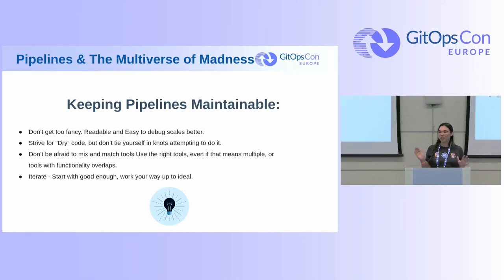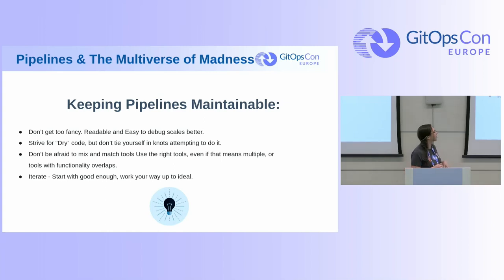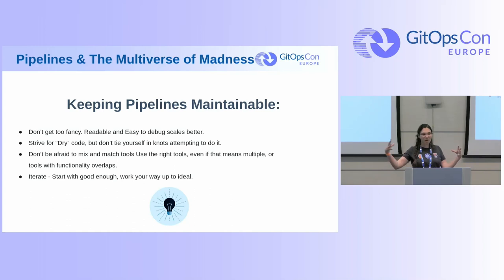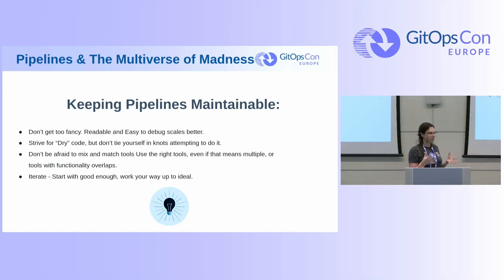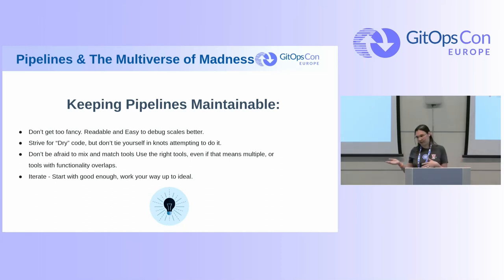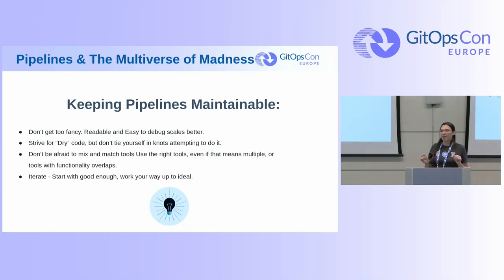The last part is keeping things maintainable. Don't keep it too fancy. Find logical breakout spaces where you can break things out, because it makes your overall CI/CD process easier to debug when something goes wrong, easier to follow, easier to observe. Feel free to experiment — try and fail. And at the end of the day, there's copy-paste for a reason. You can just move stuff around. Strive for DRY code, but don't kill yourself with that.